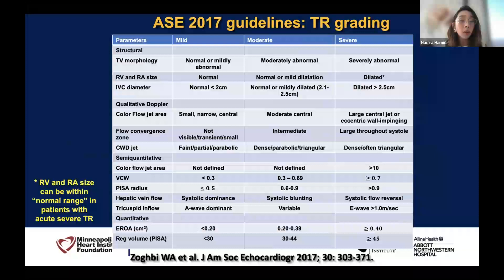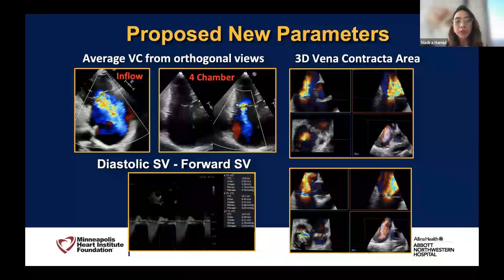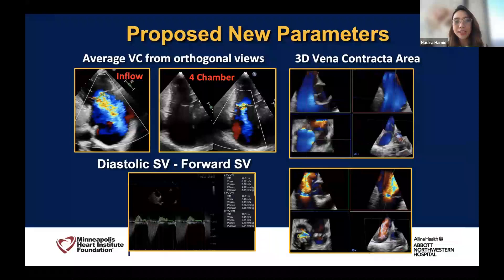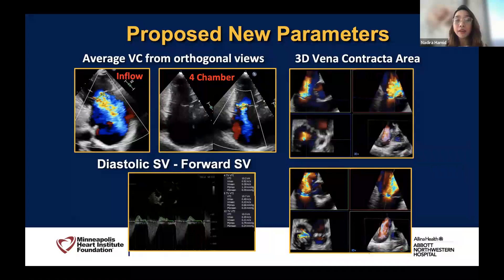The ASE 2017 guidelines on quantification rely heavily on qualitative and quantitative methods, and basically on PISA. We know the limitations of PISA. Let me take you through a couple of the new proposed parameters we use in the core lab and in my clinical practice — initially time consuming, but over time it becomes quick and really reliable. I take an average vena contracta from orthogonal views — from your RV inflow and your four-chamber view. I do a lot of quantitative measuring of stroke volume across the tricuspid valve and subtracting it from the LV stroke volume or RV stroke volume. We also do a lot of 3D vena contracta area.